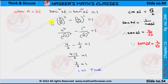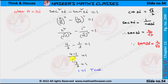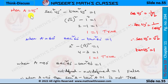Substituting these values: (2/√3)² − (1/√3)² = 1. This gives 4/3 − 1/3 = 1. Taking the LCM, the numerator becomes 4 − 1 = 3, so 3/3 = 1. The 3s cancel and we get 1 = 1. This is true for a = 30°.